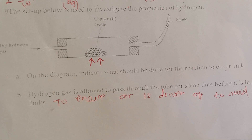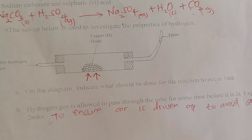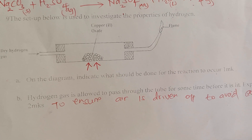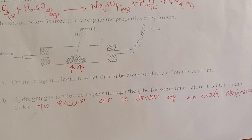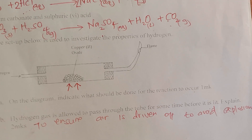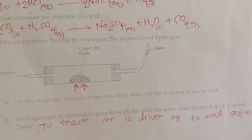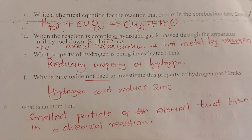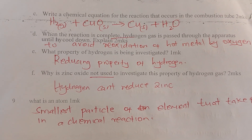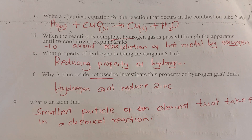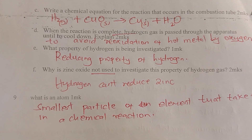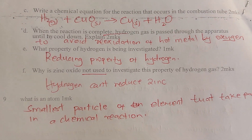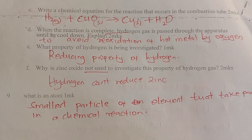The setup below was used to investigate properties of hydrogen. You should heat the apparatus so that the reaction can proceed. Hydrogen gas is allowed to pass through the tube for some time before it is ignited — this is to ensure that air is driven out of the tube to prevent explosion. When the reaction is complete, hydrogen gas is passed through the apparatus until it cools down to avoid re-oxidation of the hot metal by oxygen.